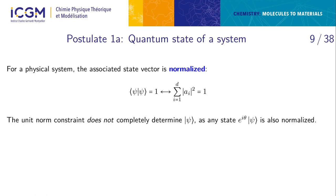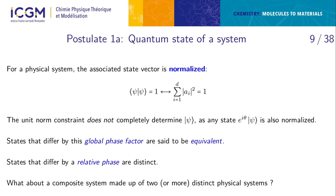Because of the unit norm constraint, we can make a link with probability. However, the state is not completely determined by the state vector psi, because any state with a global phase e^(iθ) is also normalized. States related by a global phase are equivalent. But if they differ by a relative phase — a sign change in some but not all amplitudes — the states are distinct.